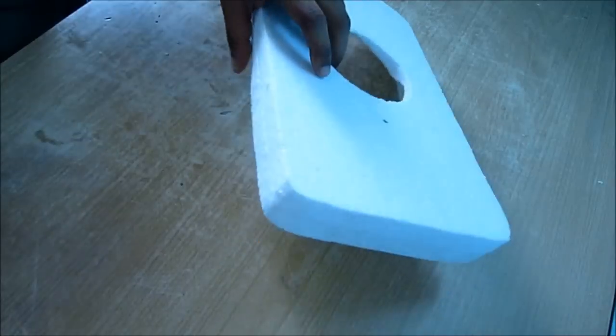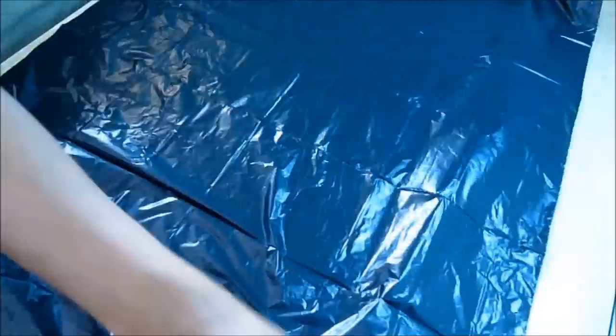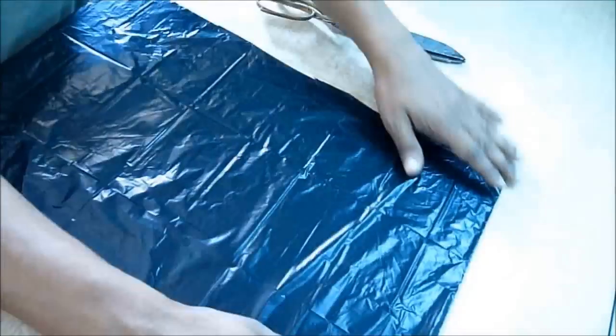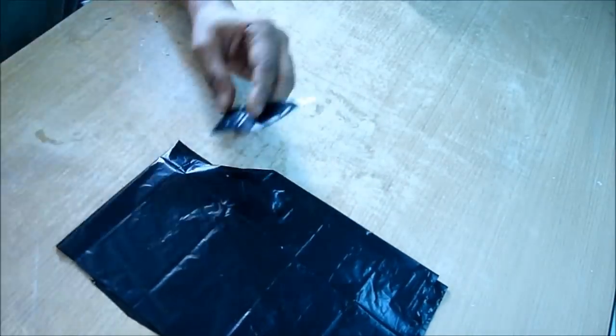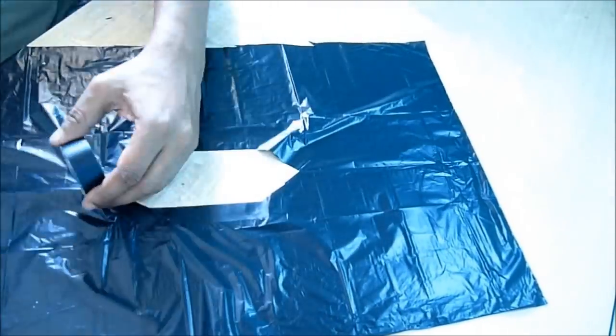Now to make the skirt, we are going to use a black garbage plastic bag. Cut the extra plastic out. At the center, cut a diamond-like shape and at the edge put black tape to make it a little thick.